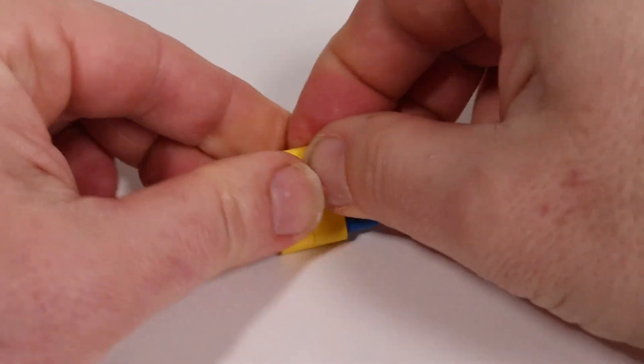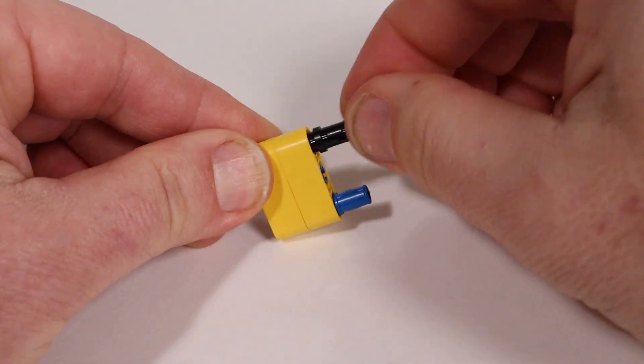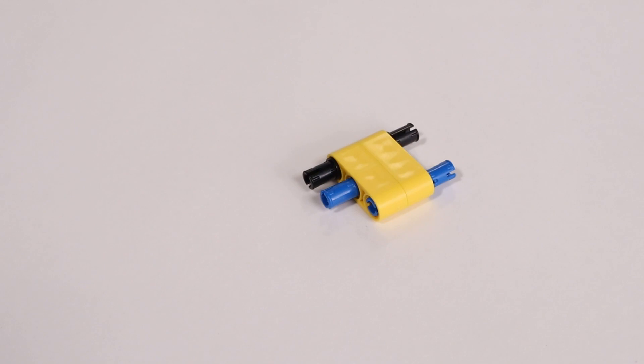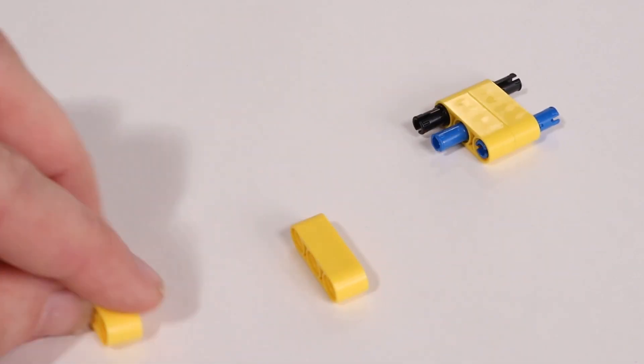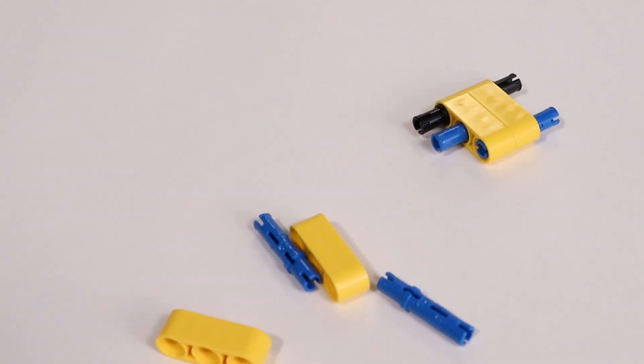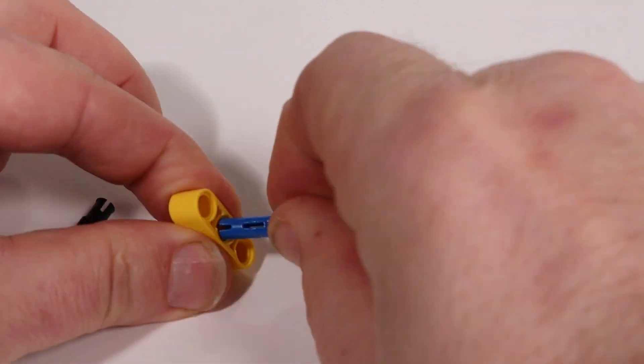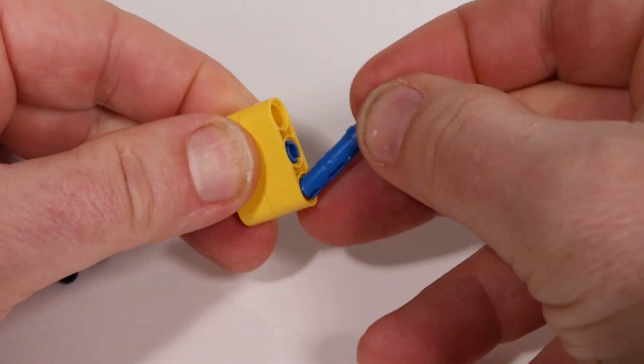Then add two of the short black pins as shown. Now repeat these same steps to make a second one. These parts are basically a spacer that's going to go inside the tank tread.